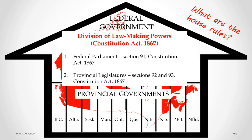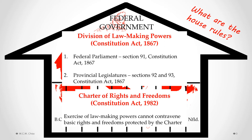The other set of rules that determines what governments can or cannot do is the Charter of Rights and Freedoms, added to our constitution in 1982. The role of the Charter is essentially to restrict the ability of government. When governments are exercising their law-making powers under the Constitution Act 1867, they cannot contravene basic rights and freedoms protected by the Charter. We'll talk about the Charter more in depth in Part Three.